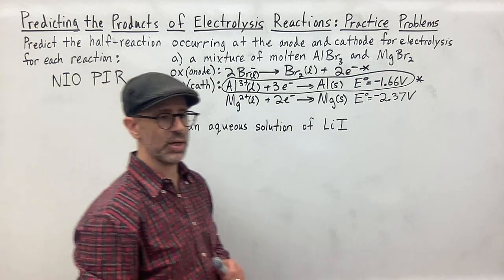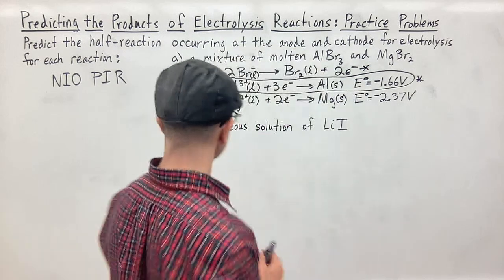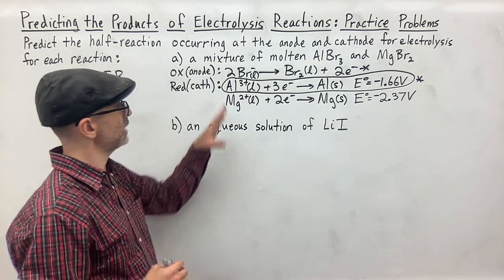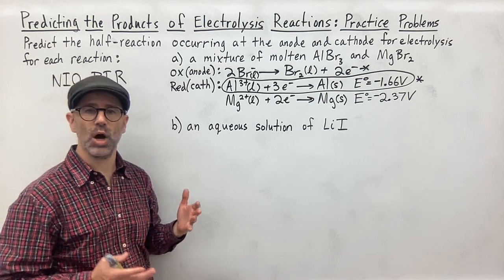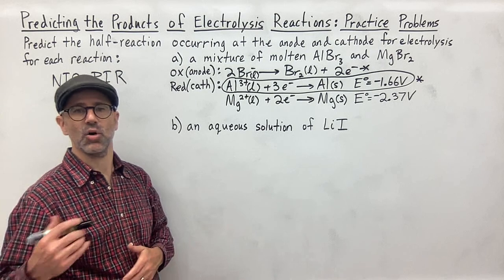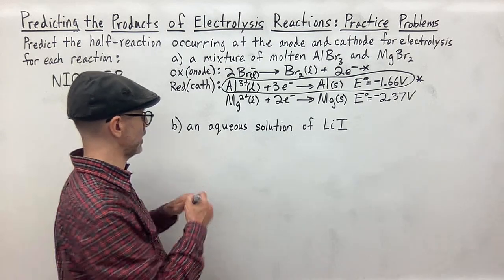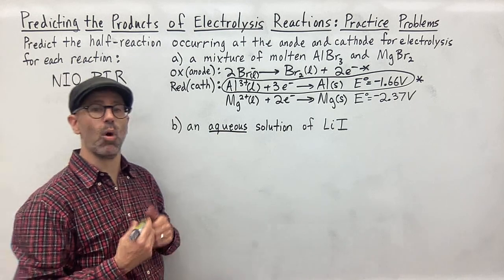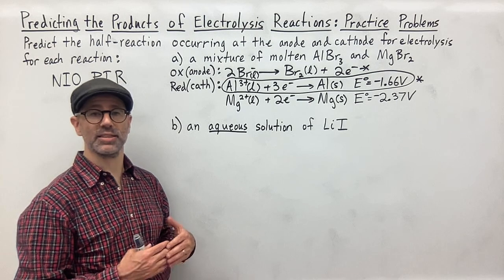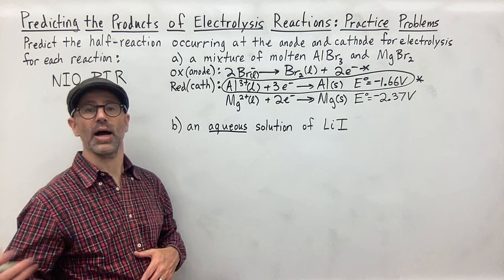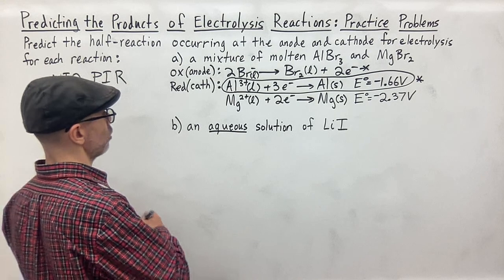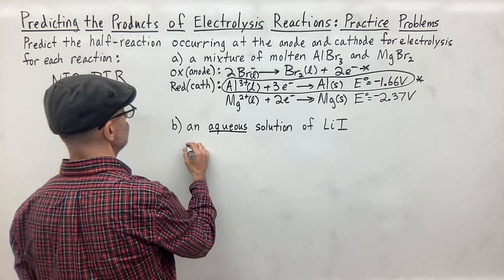Now for part B, we have an aqueous solution of lithium iodide. The procedure is exactly the same, but since this is aqueous, it's important to keep in mind that water is going to be a competitor. We need to compare and include water as something that's possibly reduced at the cathode or oxidized at the anode.